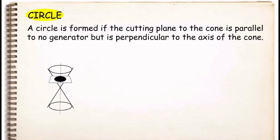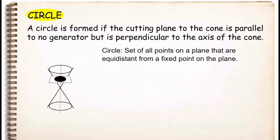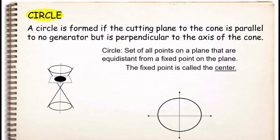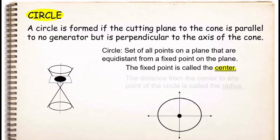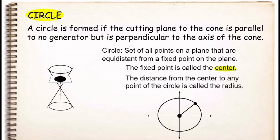Now, what is a circle? A circle is a set of all points on a plane that are equidistant from a fixed point on the plane. The fixed point is called the center, and the distance from the center to any point of the circle is called the radius.